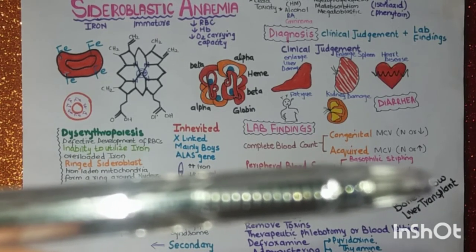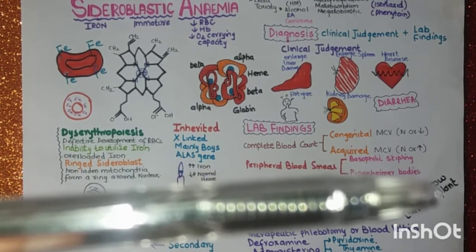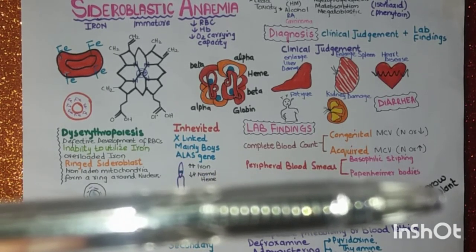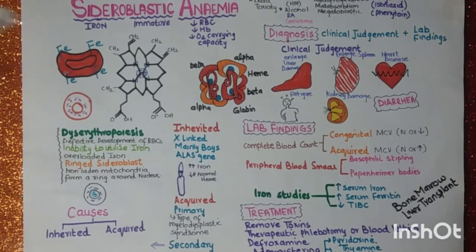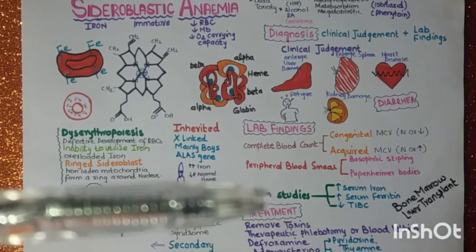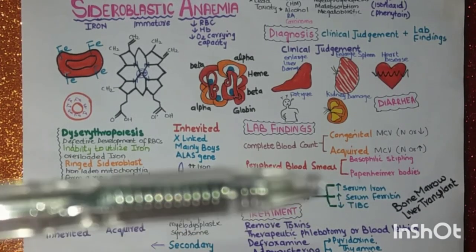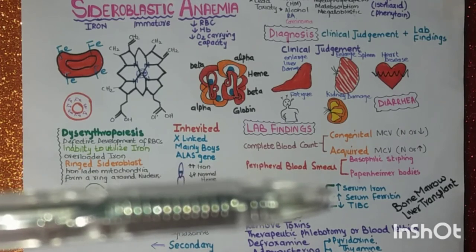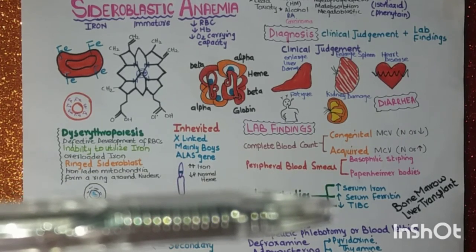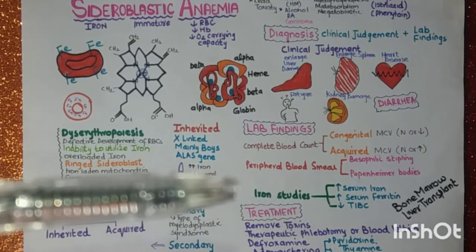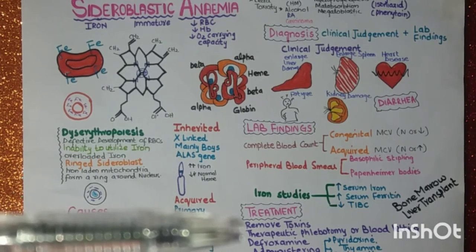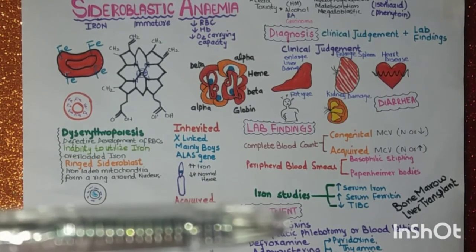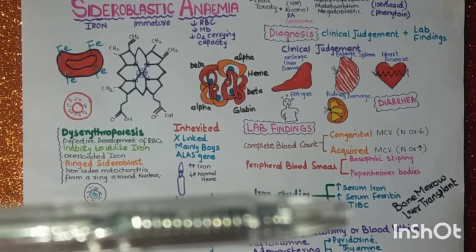In the peripheral blood smear, you will see basophilic stippling and Pappenheimer bodies. Basophilic stippling represents accumulated RNA, and Pappenheimer bodies are iron granules engulfed by phagosomes. In iron studies, you will find increased serum iron, increased ferritin, and decreased TIBC (total iron binding capacity).